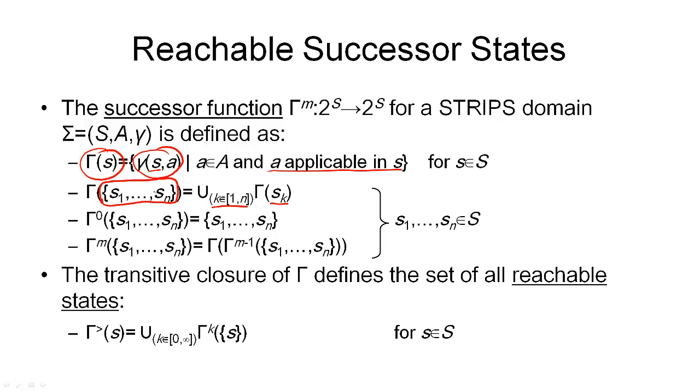We can make this definition yet more general by naming the number of steps we want to allow. In the simplest case, we have gamma 0, which means we allow 0 steps. So if we're in any of these states S1 through SN, and want to compute the states that we can be in after 0 steps, well, that's exactly the states we start in. If we don't do anything, we can't go to any other states.